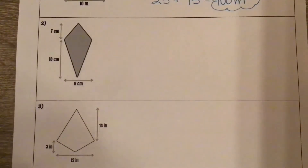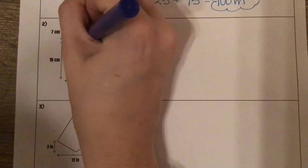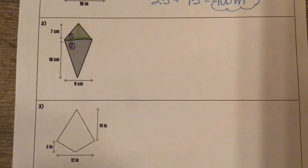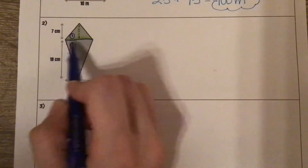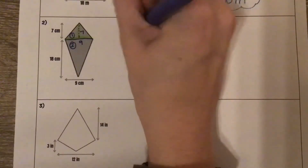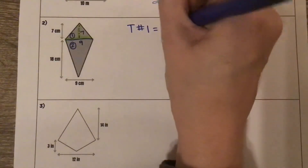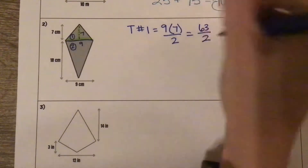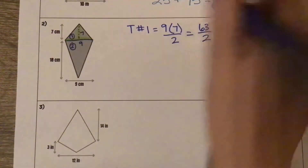For number 2, same thing — I am going to divide it into two triangles: triangle number 1 and triangle number 2. For triangle number 1, we have a base going across. We have a base of 9 times a height of 7 divided by 2. 9 times 7 is 63 divided by 2 gives me 31.5.